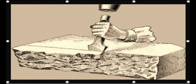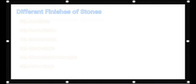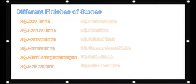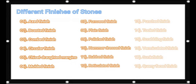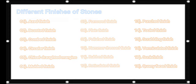Various types of finishes are available for dressing of stones. The use of each finish depends upon the type of work. The types of finishes include: axed finish, boasted finish, combed finish, circular finish, chisel draft margins, molded finish, furrowed finish, plain finish, polished finish, hammer dressed finish, rubbed finish, reticulated finish, punched finish, tooled finish, scrabbling finish, vermiculated finish, sunk finish, and quarry faced finish.